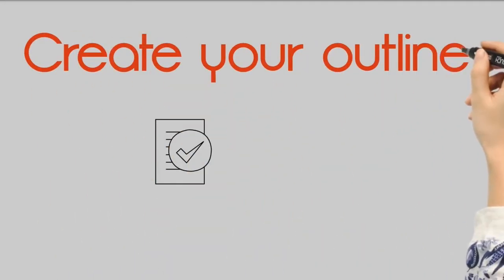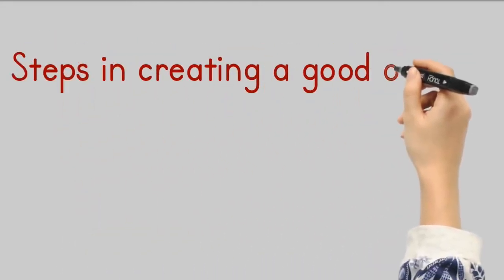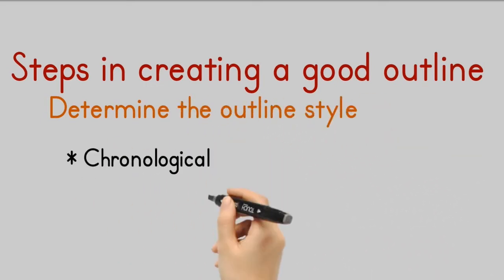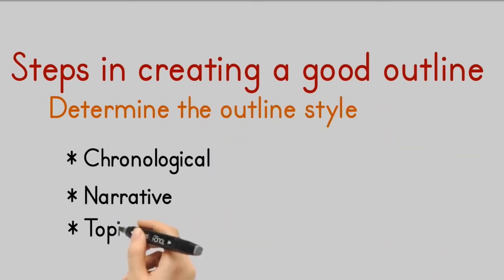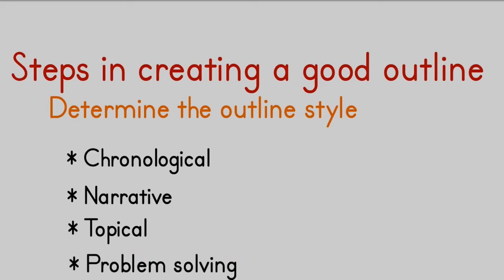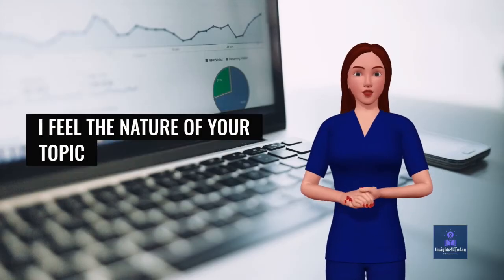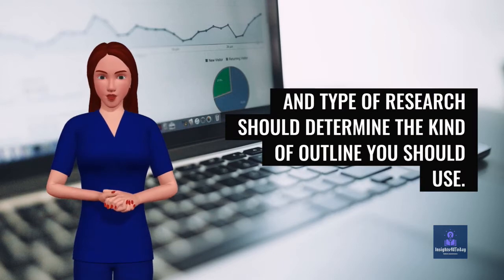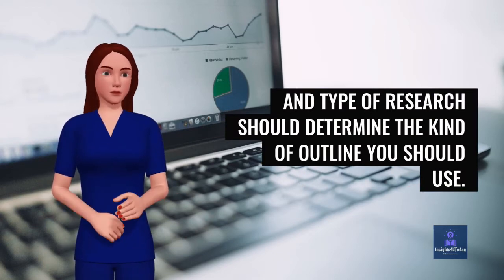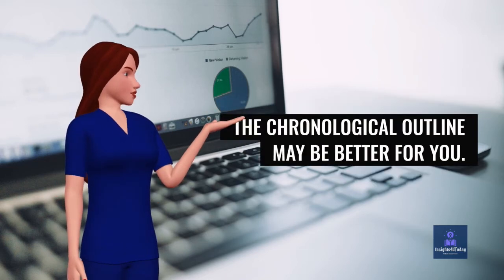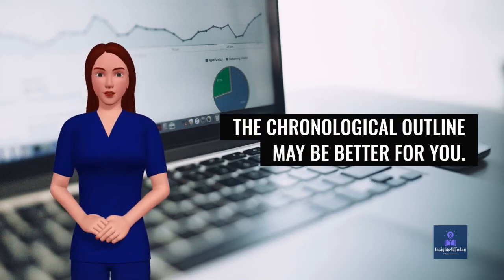Then, create your outline. The SlideShare companies provided three steps in creating a good outline for your presentation. They taught that you must first determine the outline style, which could be chronological, narrative, topical, problem-solving, or the cause and effect style. The nature of your topic and type of research should determine the kind of outline you should use. For example, if you are working on a study that has a timeline, the chronological outline may be better for you.